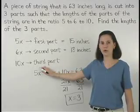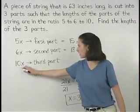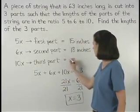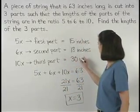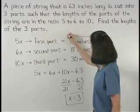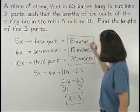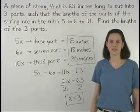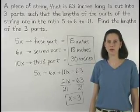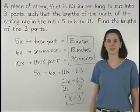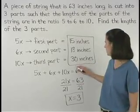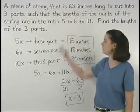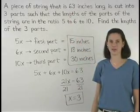And the length of the third part of the string, 10x, is 10 times 3, or 30 inches. Finally, make sure to check the answer back in the original problem to see if it makes sense. In this case, 15 plus 18 plus 30 equals 63, so our answer checks.